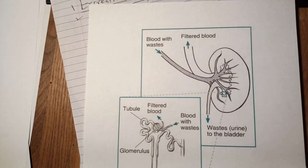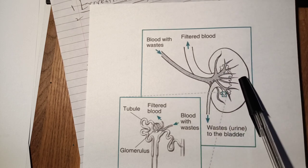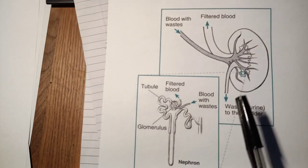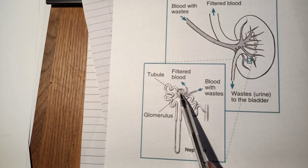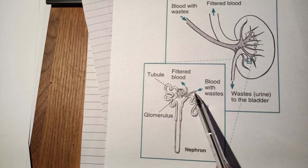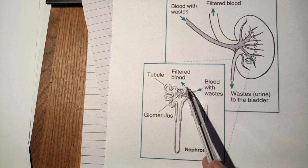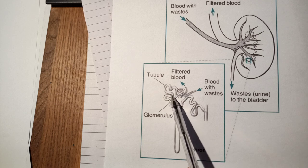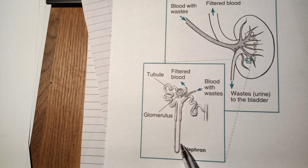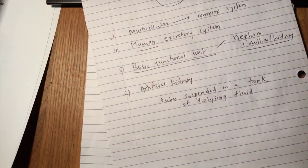Here is a simple diagram to remember: the blood comes with waste products via the renal artery, which divides into different branches. The filtered pure blood goes through the renal vein. The nephron has Bowman's capsule with the glomerulus, where filtration occurs. The filtrate secreted into Bowman's capsule passes through the chain of tubules — proximal convoluted tubule, loop of Henle, distal convoluted tubule — and then into the collecting duct.